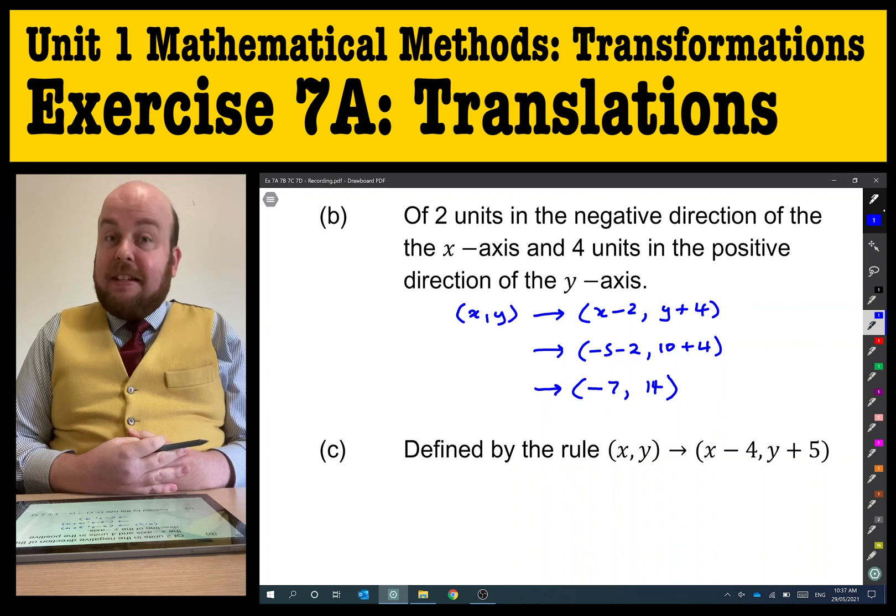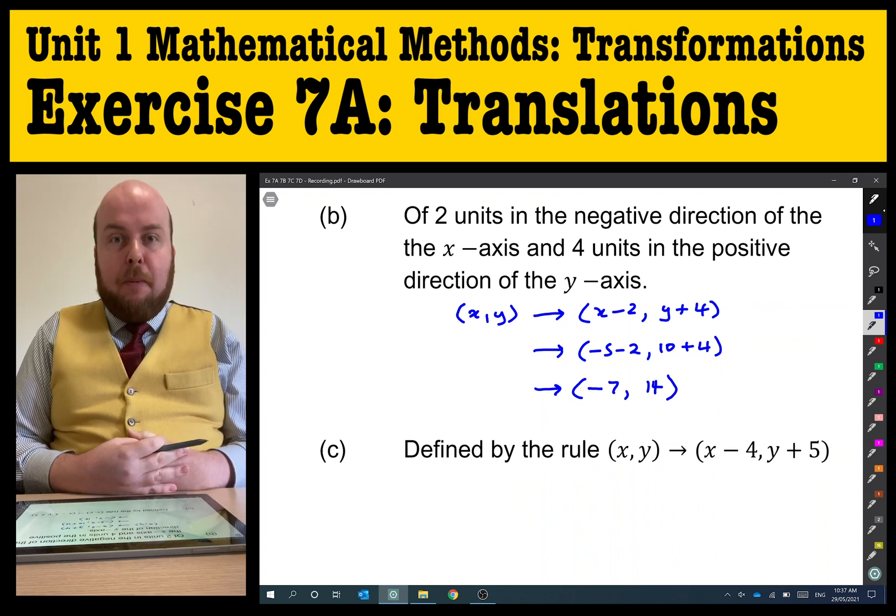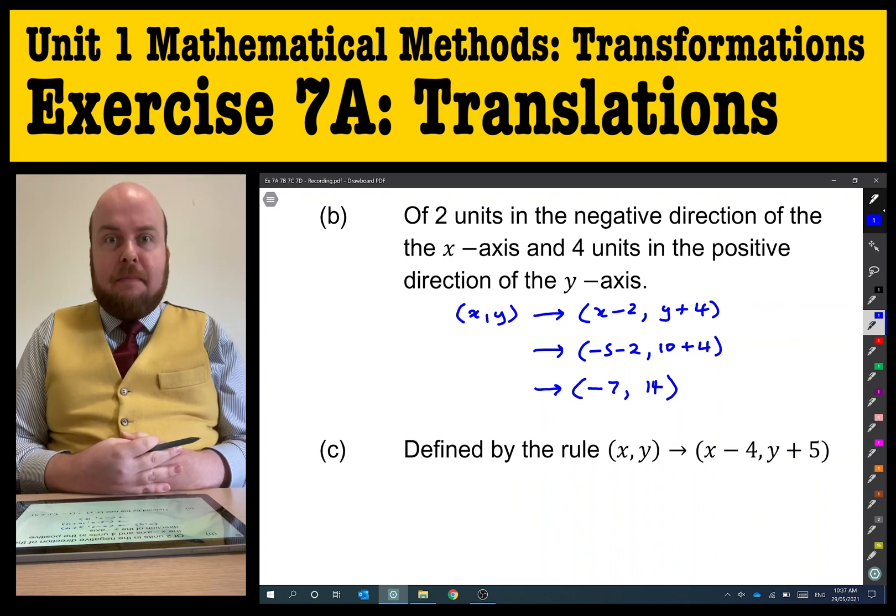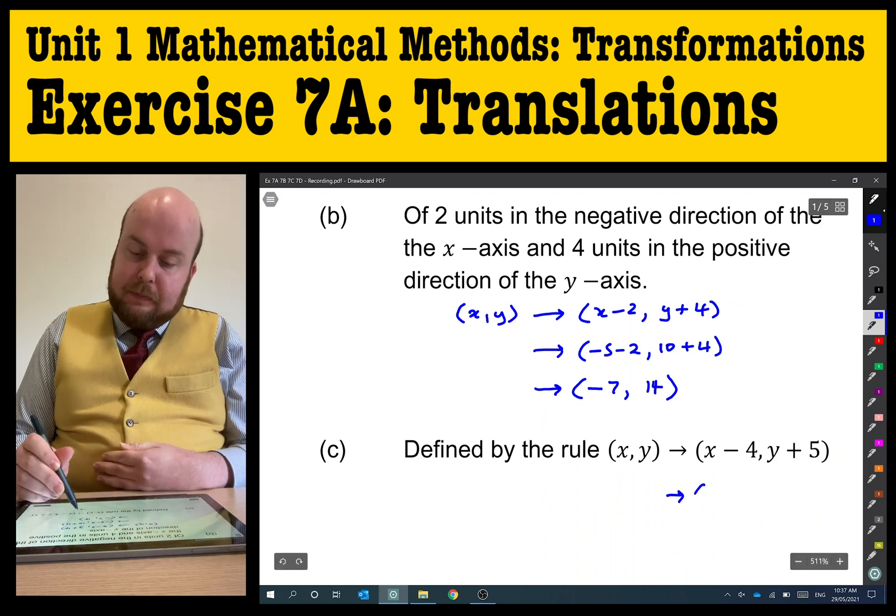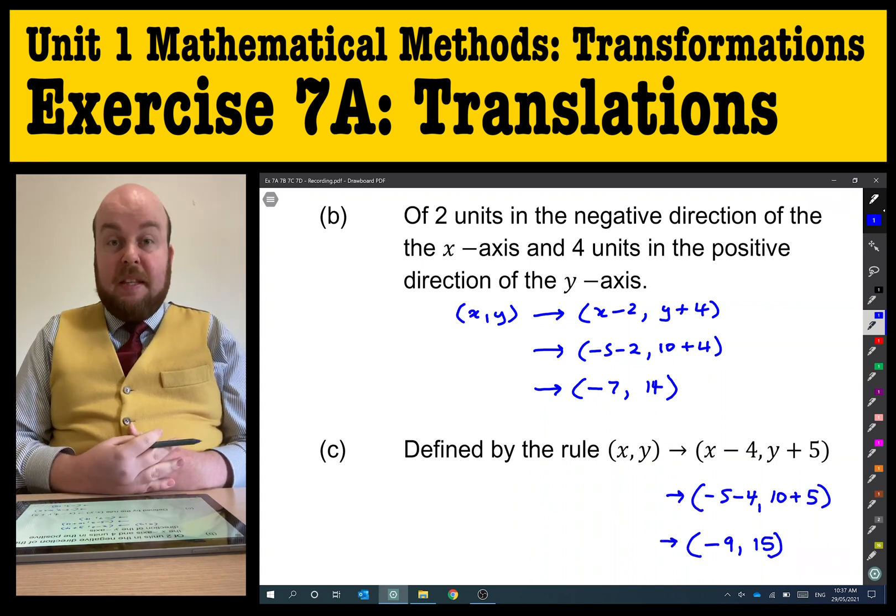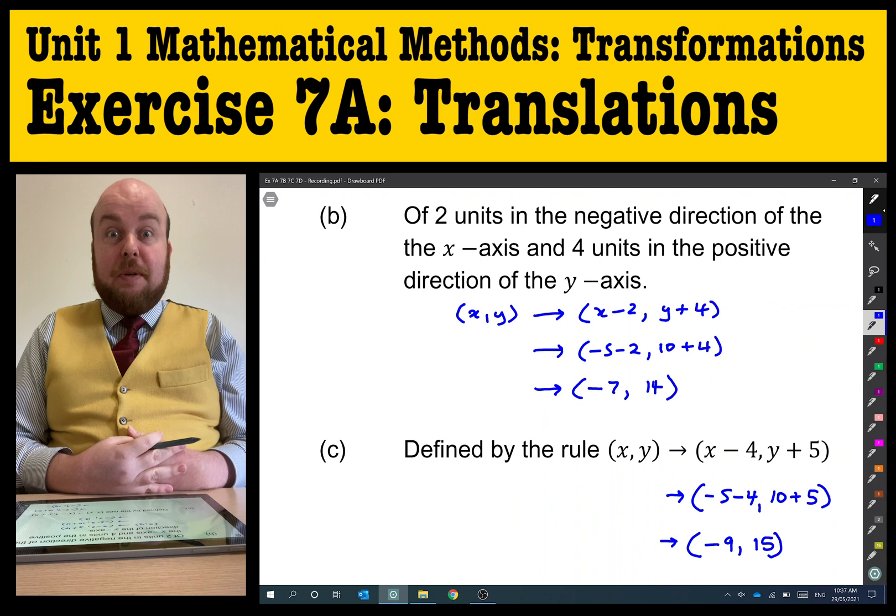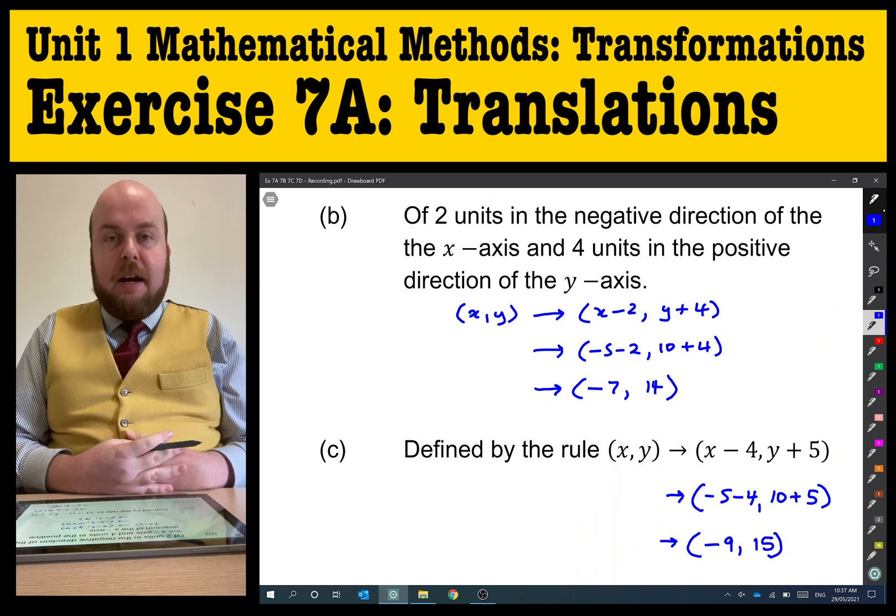Let's have a look at C. C has been written already in the format that was describing as the left-hand method. Defined by the rule, (x,y) forms (x - 4, y + 5). This was a little bit easier because we could just do a substitution of (-9,15).